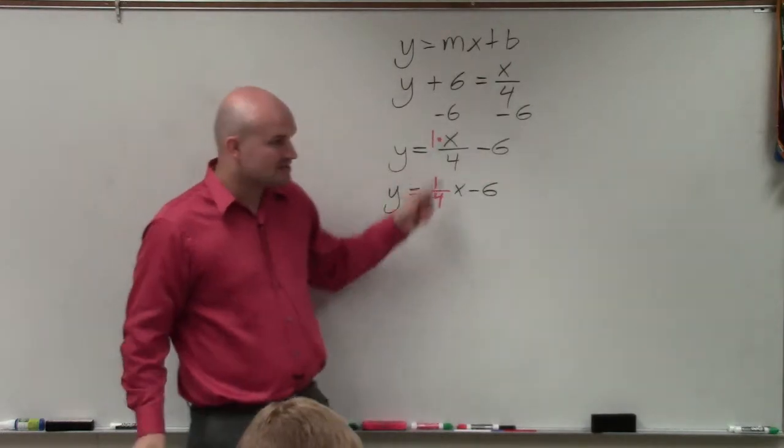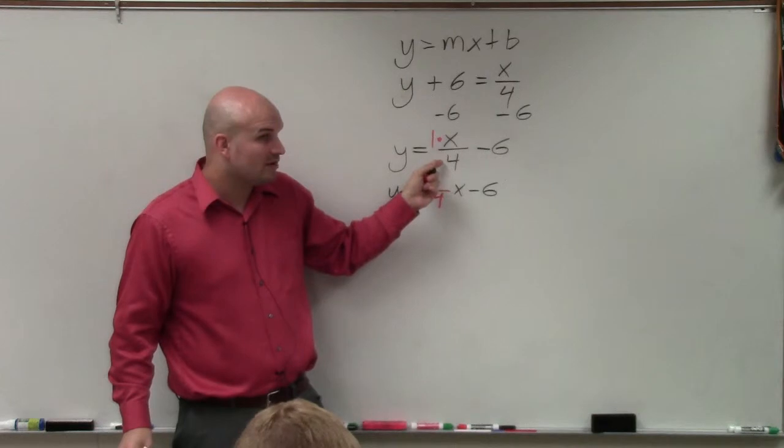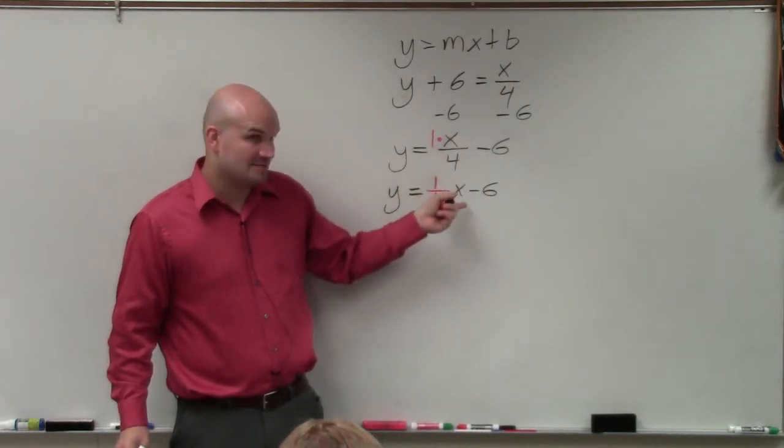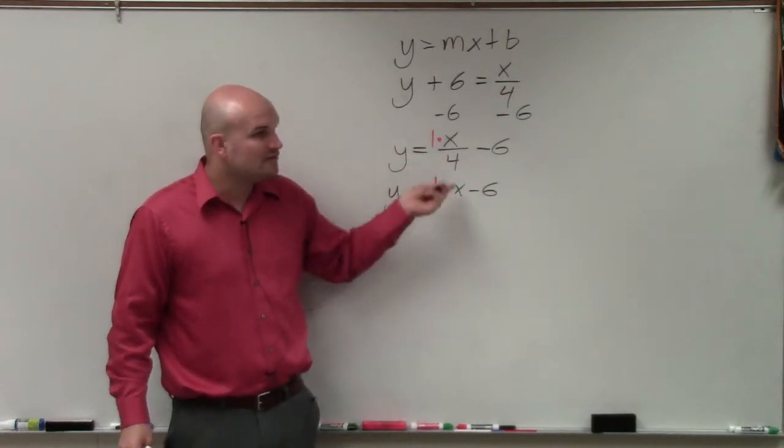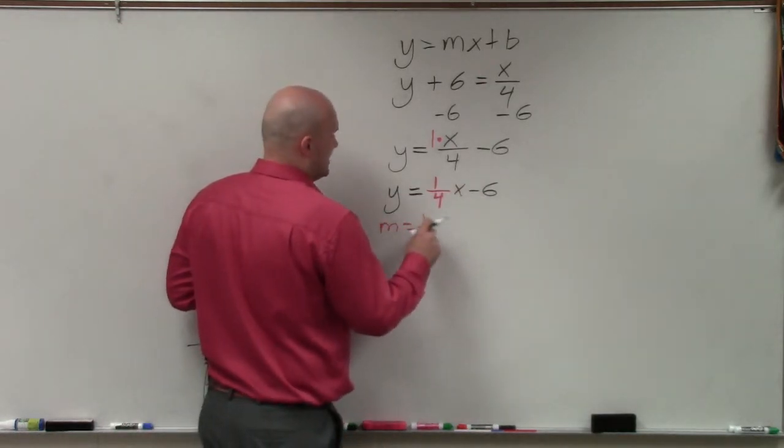So these are equivalent forms. 1 times x divided by 4 is really the same thing as 1 fourth times x. Same thing. But now, hopefully you guys can see it in this format. It's much easier to identify that the slope is 1 fourth.